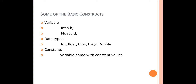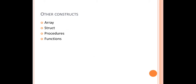The next thing is about basic concepts. For example, variable declarations like 'int a, b' or 'float c, d' — where we have data types and variable names called identifiers — and then we have a list of data types, constants, and variable names with constant values. Other concepts include arrays, structs, procedures, and functions. All these are some basic concepts we use in programming languages.